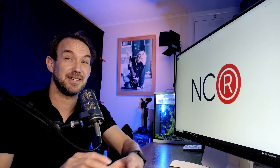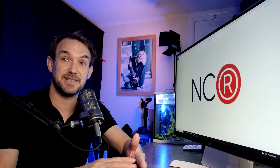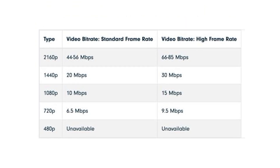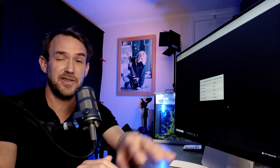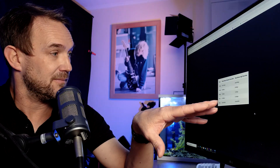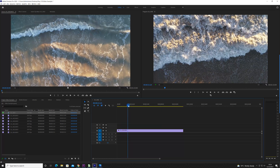Before we jump into Premiere Pro, let's have a quick look at YouTube's recommended export settings for HD and 4K video. For 1080p they recommend between 10 and 15 megabytes per second, and for 4K between 44 and 85 megabytes per second. You'll find this table on the YouTube website — these are their recommended bitrate export settings.